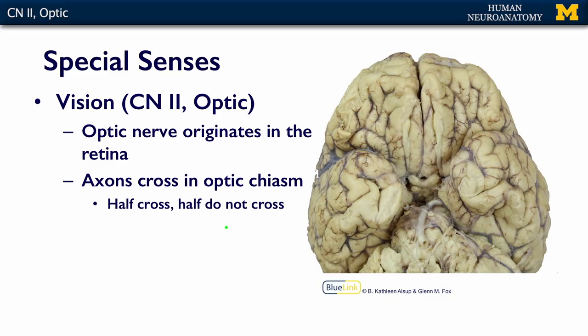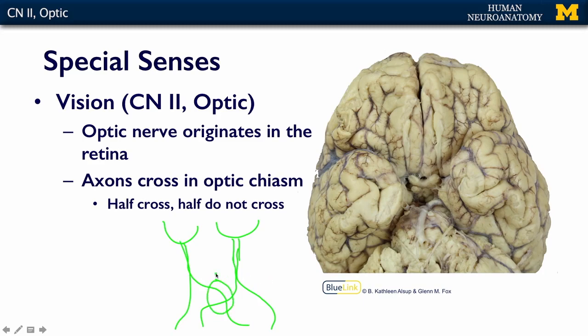To reiterate the crossing of these fibers from the retina: half of the fibers from each optic nerve are going to stay on one side, and half are going to cross to the other side. That's all I want you to know for now — that half cross and half don't. The ins and outs of the visual system and all of the projections are very complicated and beyond what we have time for in this MOOC.